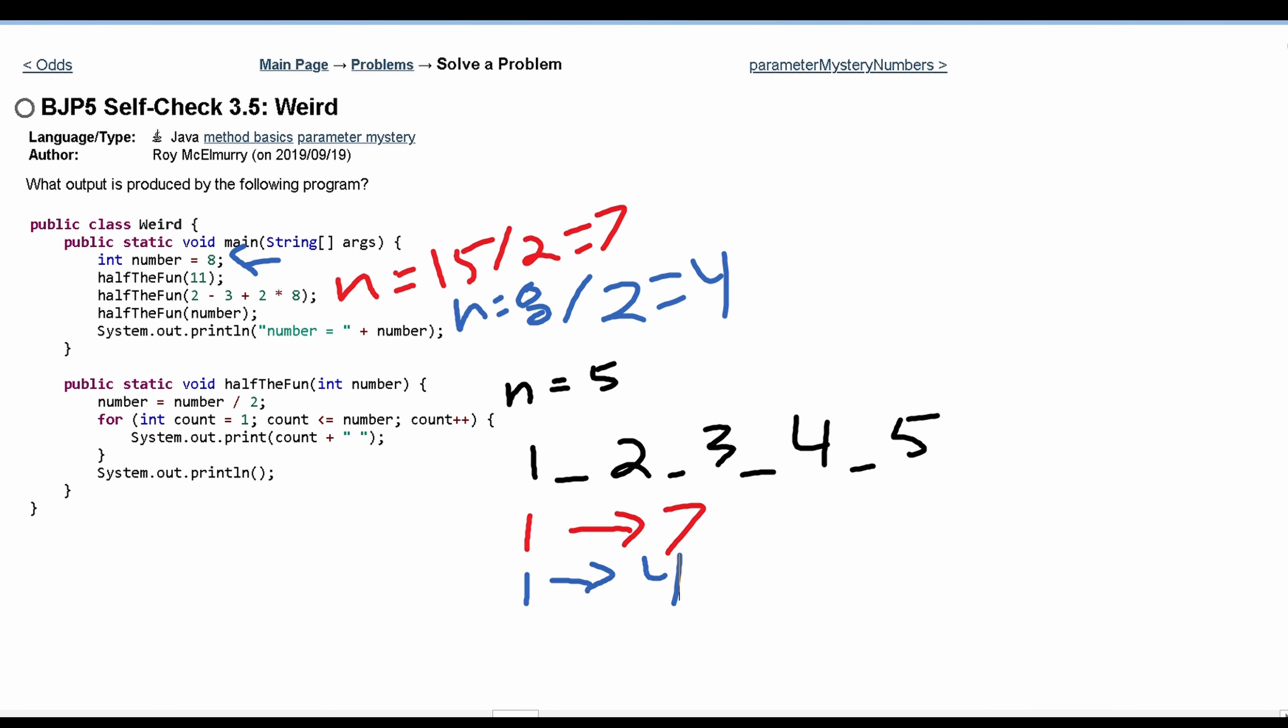And lastly we have this line, this system.out.println right here which we need to look at and all we're printing out is number and then we're going to have our equal sign and then a space and then we are just going to have the number which we stored right here and that is 8.